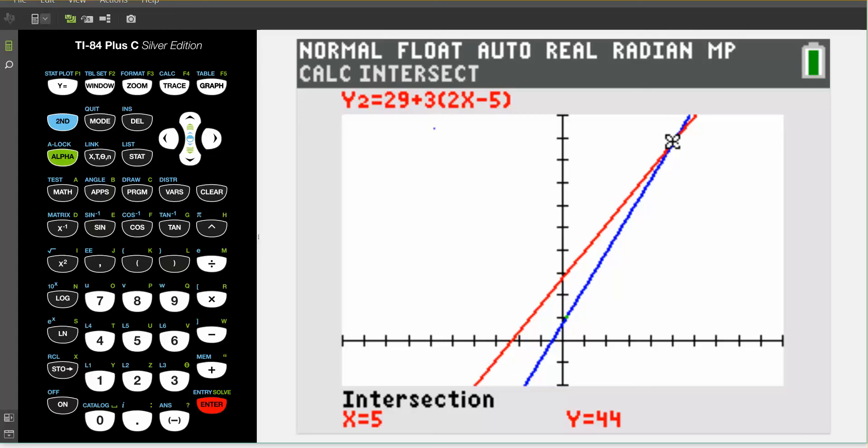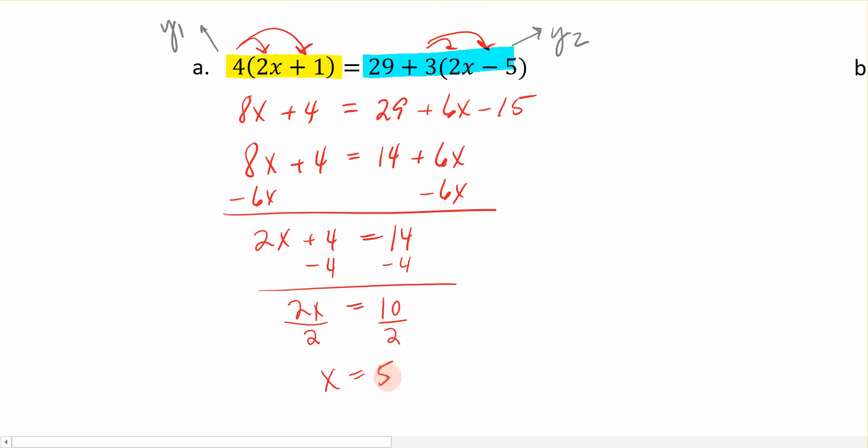and the intersection indeed is occurring when x is equal to five. And that tells me right away if I wanted to verify whether or not the algebraic solution that I found was correct. So algebraically, this is what we're doing, and graphically, if we were to put these into the graph, what we are finding is that the solution to this equation is where those two lines intersected.